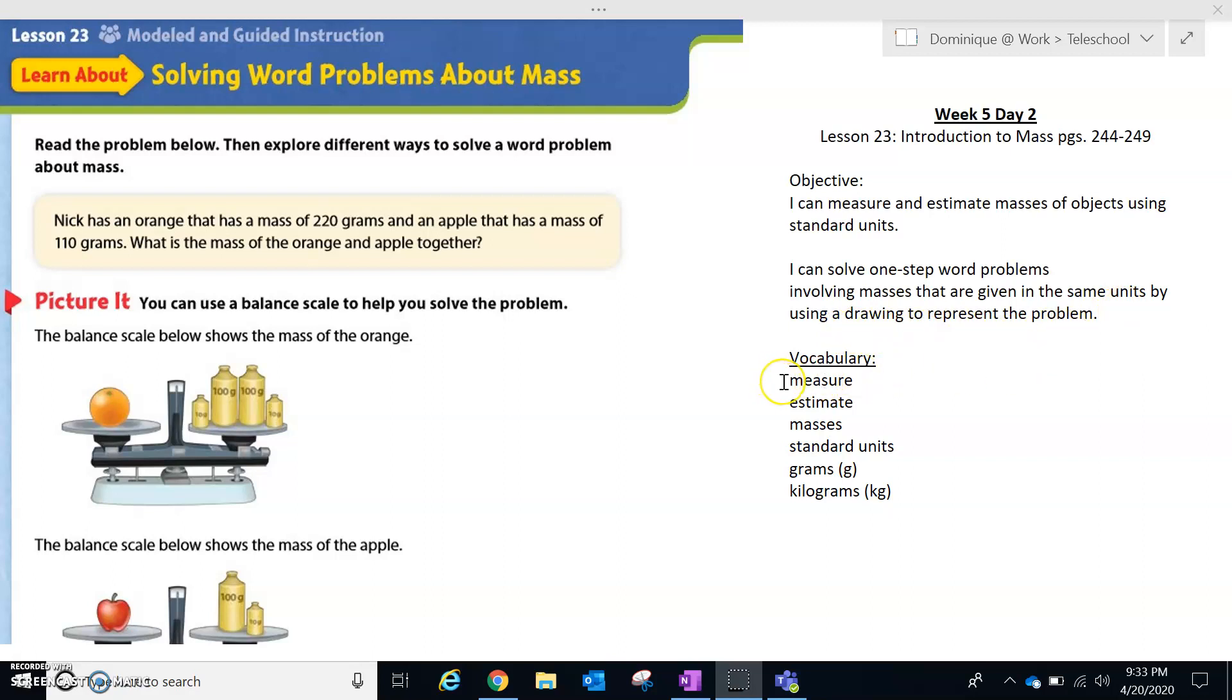Our vocabulary is: measure, estimate, which means making an educated guess. We want to get as close to the answer as possible. Masses, or you may know it also as mass. Remember, mass is how heavy something is, or how much it weighs. Standard units, that's just the type of unit we use when we're talking about mass. And those two units are grams, which sometimes you may just see written as a G, or kilograms, which you may see written as KG.